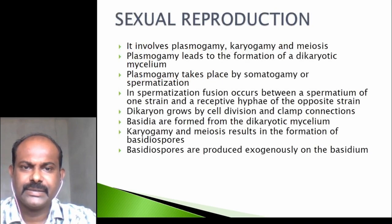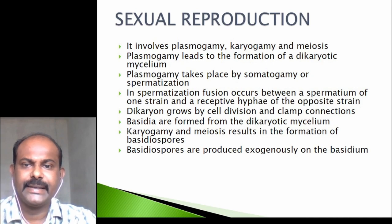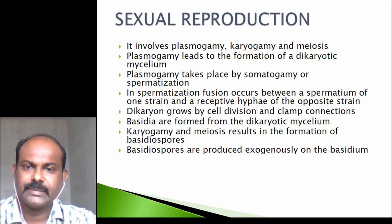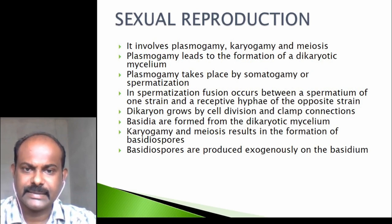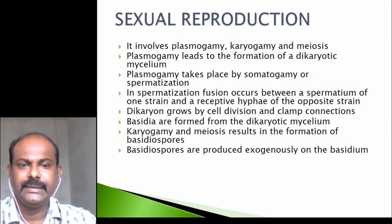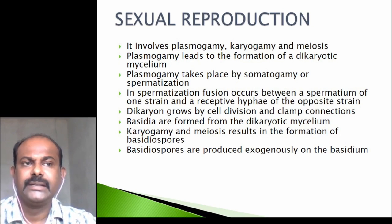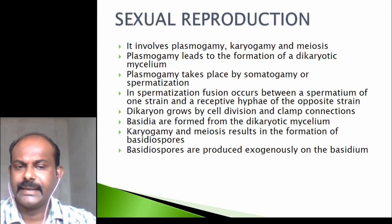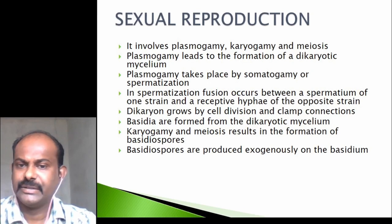Sexual reproduction is very complicated and involves plasmogamy, karyogamy, and meiosis. Plasmogamy leads to the formation of a dikaryotic mycelium and takes place by somatogamy or spermatization. In spermatization, fusion occurs between the spermatium of one strain and the receptive hyphae of the opposite strain. The dikaryon then undergoes cell division and clamp connections. Basidia are formed from the dikaryotic hyphae. Karyogamy and meiosis result in the formation of basidiospores.